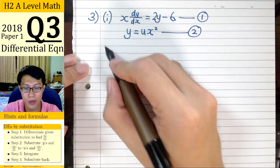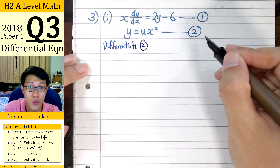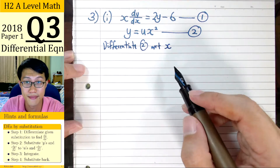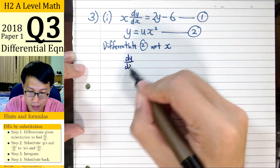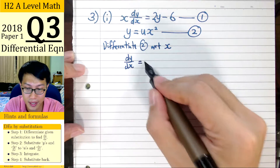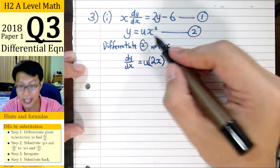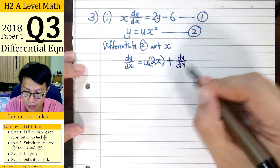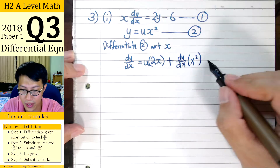With the given substitution, we will differentiate equation 2 with respect to the variable x. Differentiating implicitly, differentiation of y gives us dy/dx. Here, we have to use the product rule to differentiate this quantity. We leave u alone and differentiate x squared with respect to x, giving us 2x, plus we leave x squared alone and differentiate u implicitly to get du/dx. This is our first step — we differentiate what we are given. Let's call this equation 3.